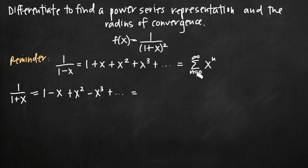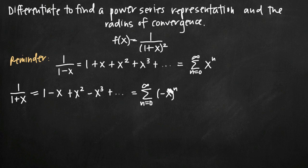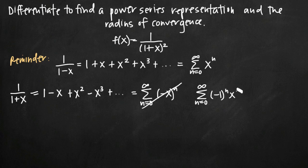Over here in our infinite sum, we replace x with negative x to get the sum from n equals 0 to infinity of negative x raised to the n power. Whenever we have a negative 1 coefficient raised to the power of n, we can pull out that negative 1 to the n, leaving just x to the n. So instead we write the sum from n equals 0 to infinity of negative 1 to the n times x to the n — we haven't changed anything, it's exactly the same.